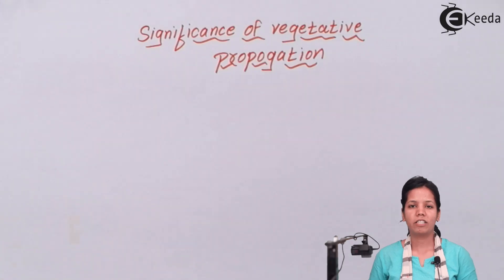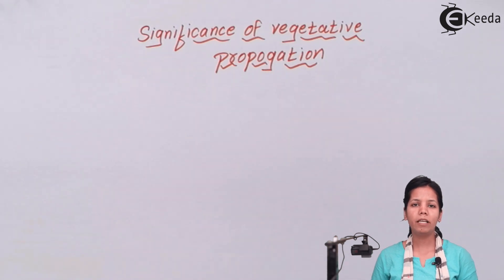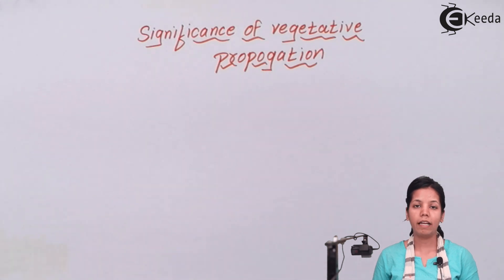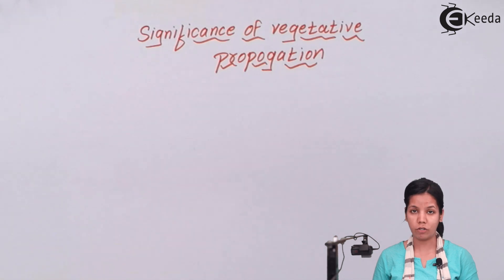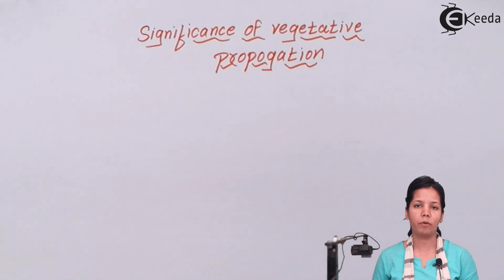When we say vegetative propagation, vegetative means part of the plant and to propagate means to grow. The simple meaning of vegetative propagation is to use any part of the plant like roots, stems, leaves, adventitious buds, axillary buds, or apical buds to develop a whole plant. That's vegetative propagation.